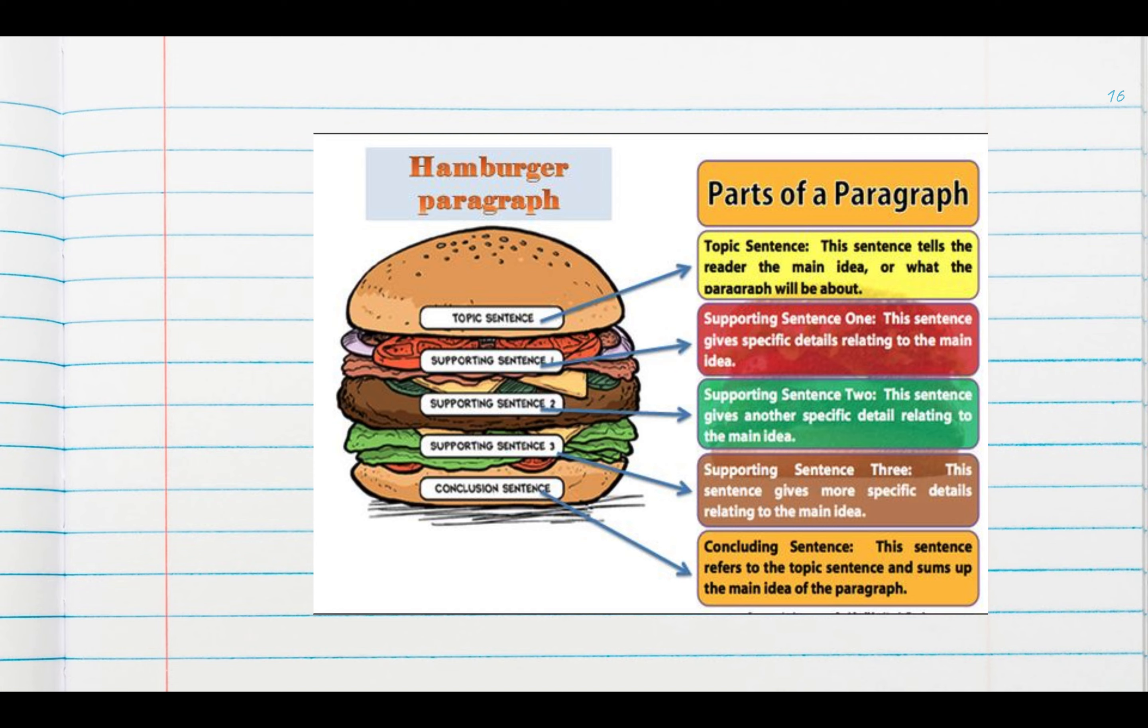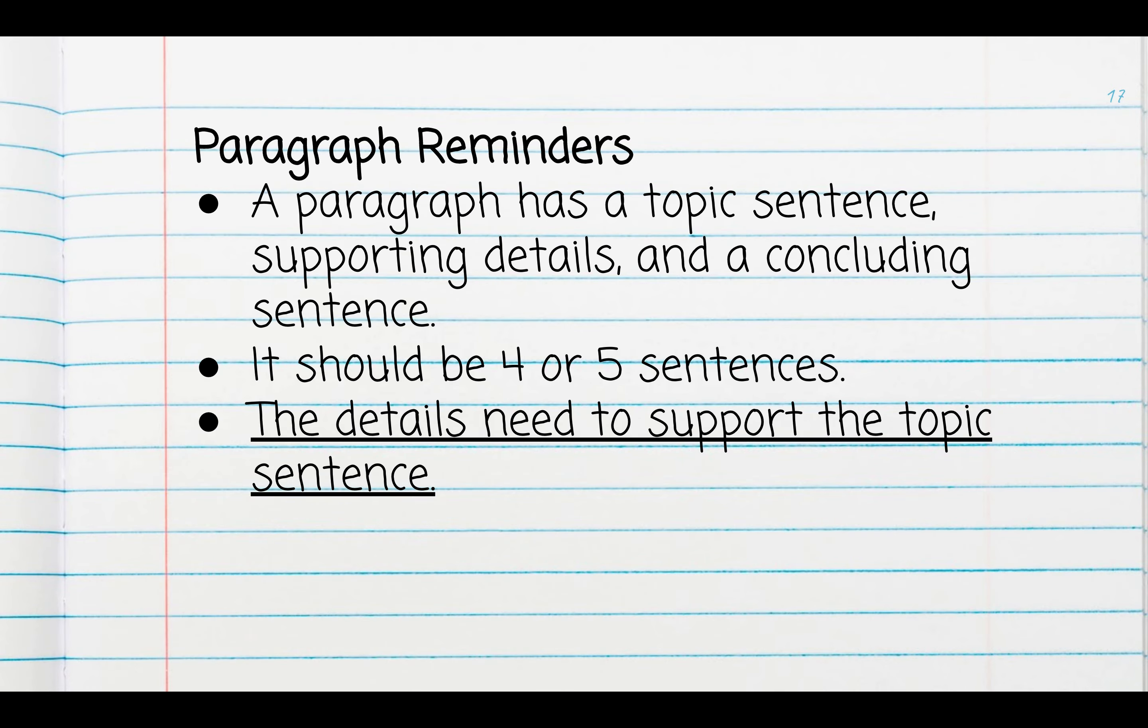All the good stuff in the middle are our supporting details. Those supporting sentences help support the main idea of the paragraph, which is also known as our topic sentence. Some paragraph reminders: again, typically we have about three, four, or five sentences in our paragraphs. We have a topic sentence which introduces the paragraph, supporting details that support that topic sentence, and then finally a concluding sentence which helps wrap up the entire paragraph and puts it to an end.